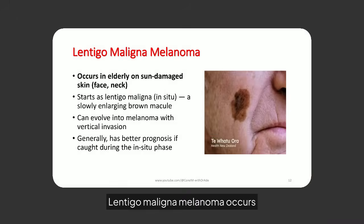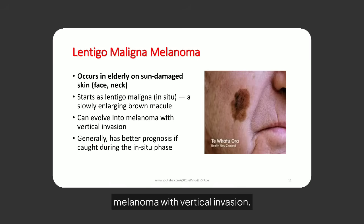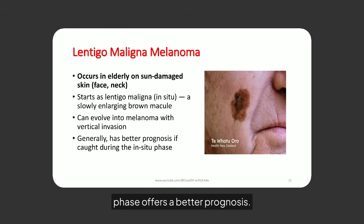Lentigo maligna melanoma occurs in the elderly on sun-damaged skin. It begins as a slowly enlarging brown macule and can evolve into melanoma with vertical invasion. Early detection during the in-situ phase offers a better prognosis.